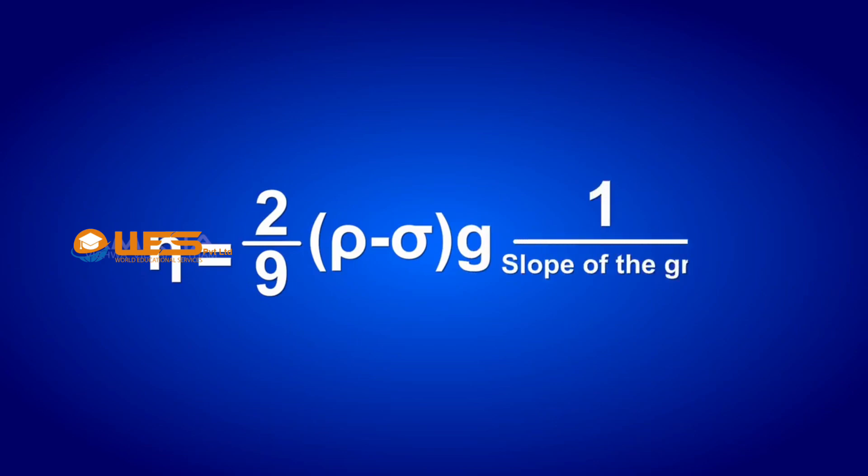From the graph, the coefficient of viscosity of the liquid can be calculated using the relation η = 2/9 (ρ - σ)g × 1/(slope of the graph).